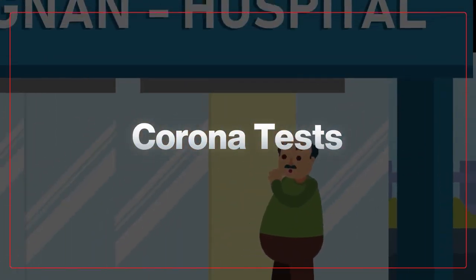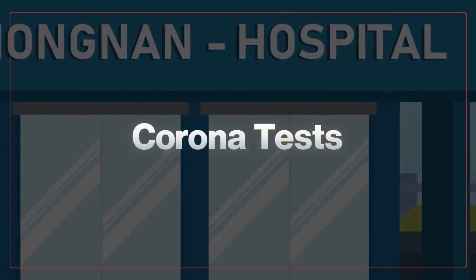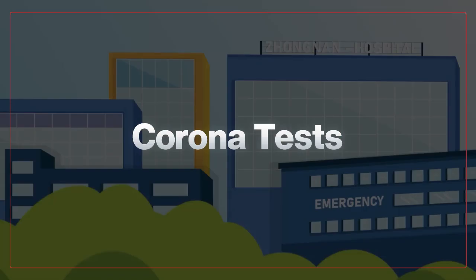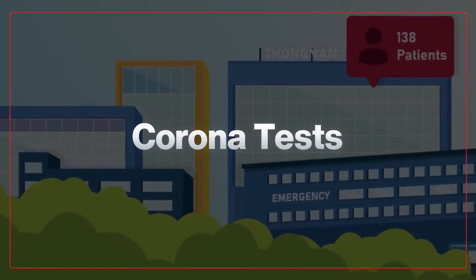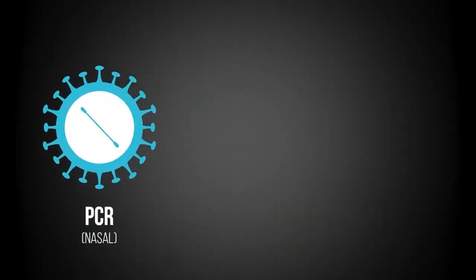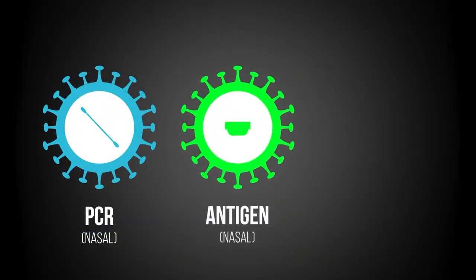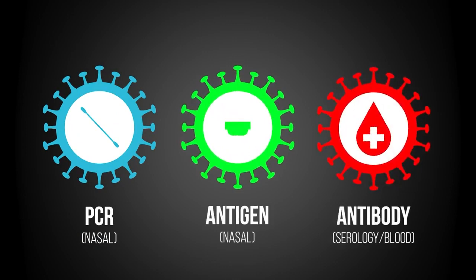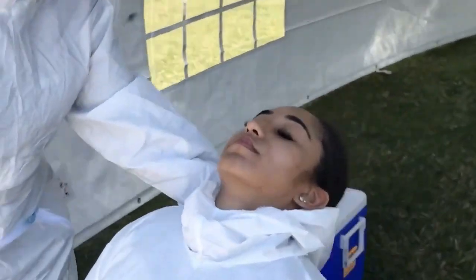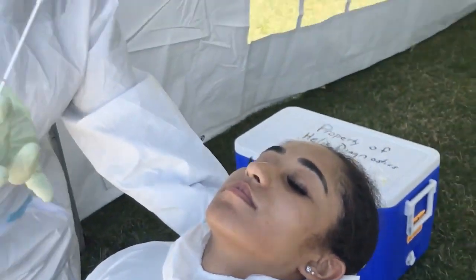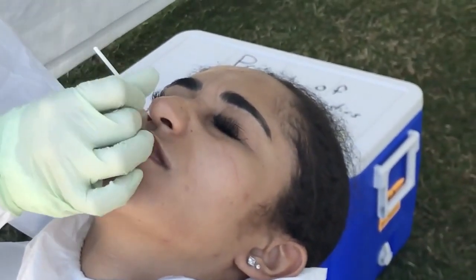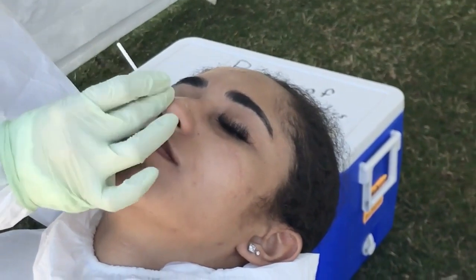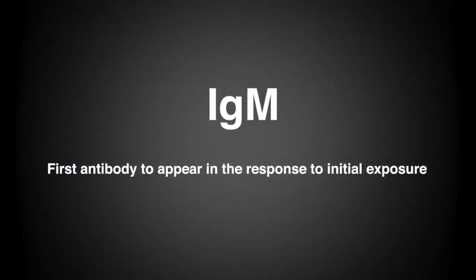Until there is an effective treatment, maybe a vaccine or herd immunity, perhaps the most important thing a healthcare system can do to minimize the number of cases and deaths is to test. There are different types of tests for COVID-19, mainly the viral test and antibody test. The viral test tells you if you have a current infection, and the antibody test tells you if you had a past infection. The various tests include RT-PCR test, NET test, swab test, rapid antigen test, and rapid antibody test.